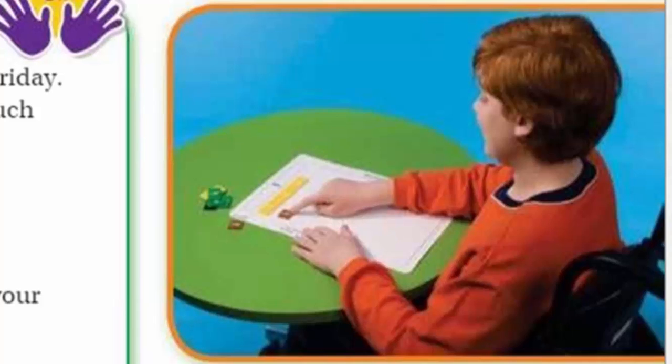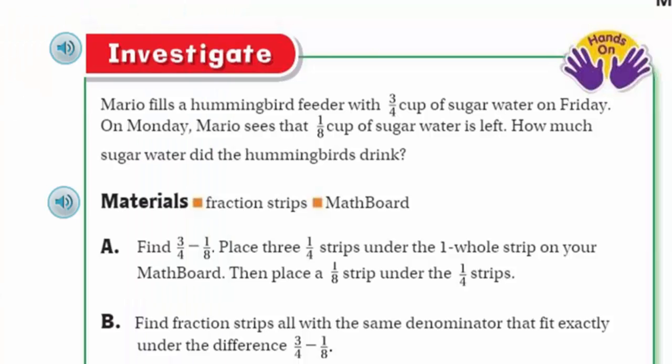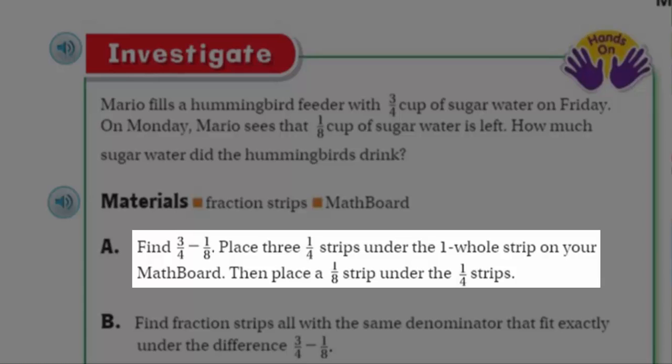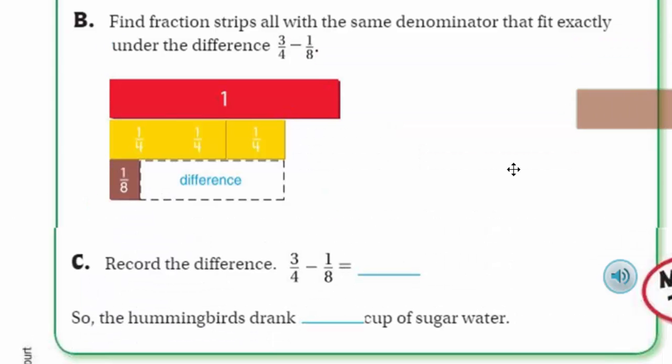It's important that we use these manipulatives or even create them in a way on paper to help us solve math problems. So let's go ahead and go to A. A states, find three-quarters minus one-eighth. Place three one-quarter strips under the one-whole strip on your math board, then place a one-eighth strip under the one-quarter strips. I'm going to put mine on top here. Here's one, I'm going to put him here. One, two, and then there's three. Now it says place one-eighth strip under the quarter strips. I'll put that there.